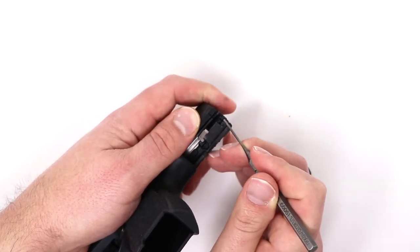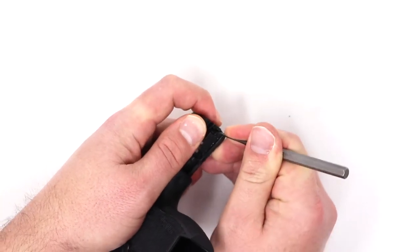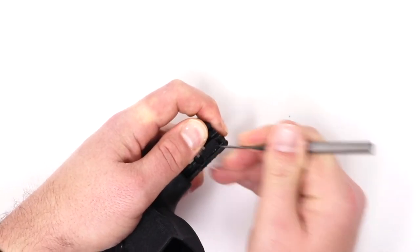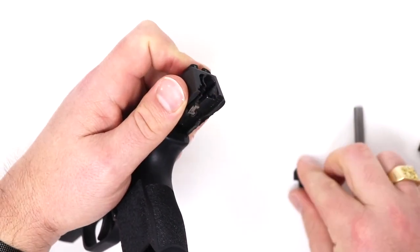This is one of the earlier models so actually all we have to do is push it in and then apply a little bit of force and we can actually slide the plate right out just like that. Careful not to lose the spring in there.